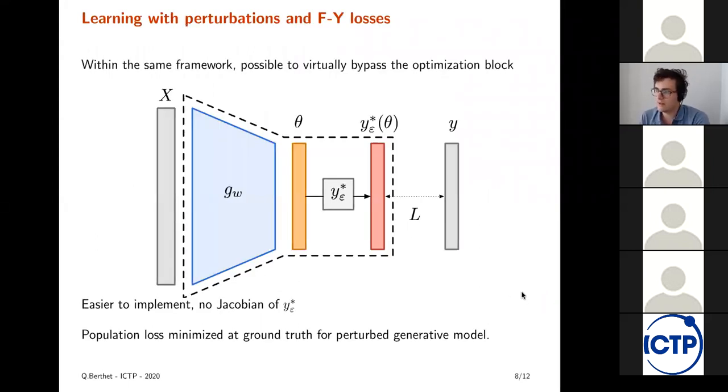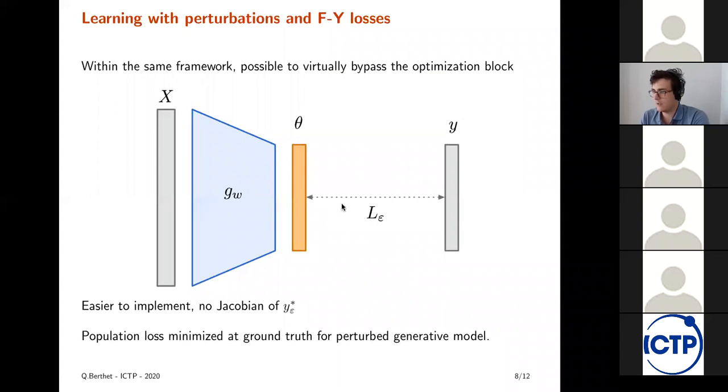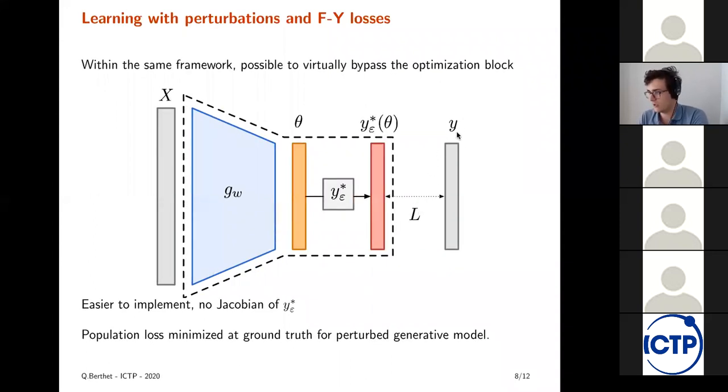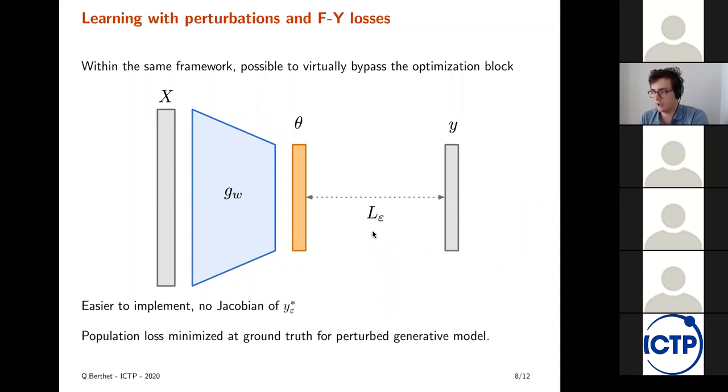And so what this allows us to do is to replace in these large neural network or machine learning pipelines, these hard optimization blocks by soft optimization blocks. This is something that was already done with the softmax with exponential weights when we're doing classification and we're proposing a generalization of this through stochastic perturbation. One thing that we can also do is instead of having a loss between any particular loss between Y and Y epsilon, we can have directly through these Fenchel-Young losses, a loss between Y and theta. This is easier to implement. We don't have to compute a Jacobian of the softmax. We just have to compute a gradient of this loss that only involves theta.